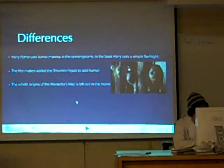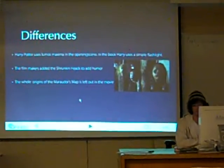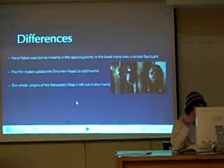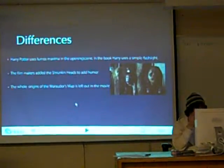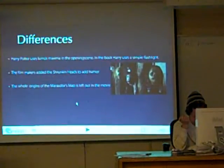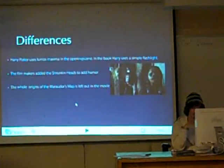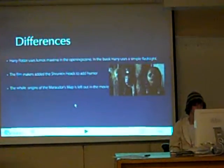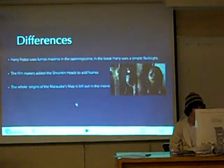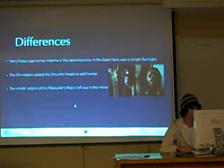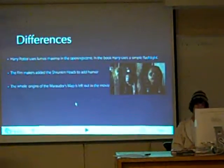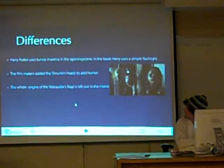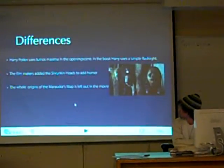As for the differences, there are a few, but if you've just watched the movie you wouldn't really tell. In the movie, Harry Potter uses the Lumos Maxima spell, whereas in the book he uses a simple flashlight. The filmmaker also added shrunken heads to add humor. The whole origins of the Marauder's Map are left out of the movie.